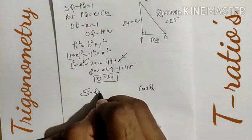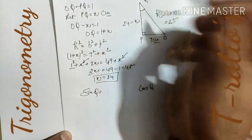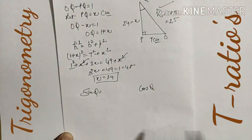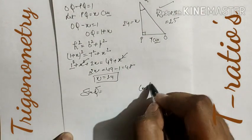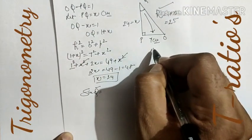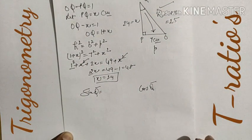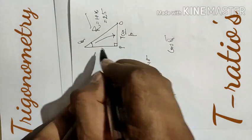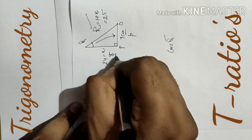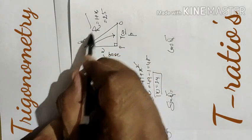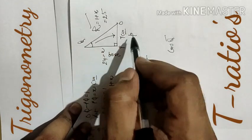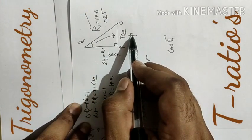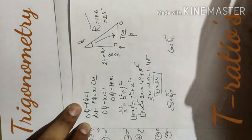Now we need to identify which side is base and which is perpendicular for angle Q. The hypotenuse is always the biggest side — that is fixed. Perpendicular and base depend upon the angle. The side in front of (opposite to) the angle is known as perpendicular. The side on which the angle is formed is the base. The remaining side is the hypotenuse.